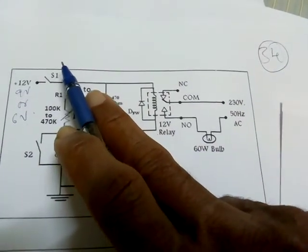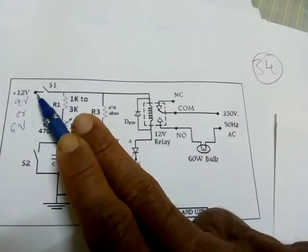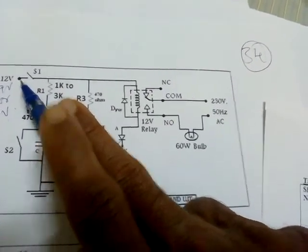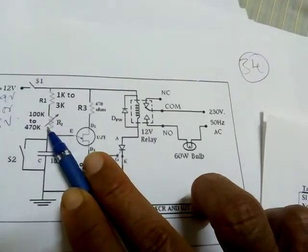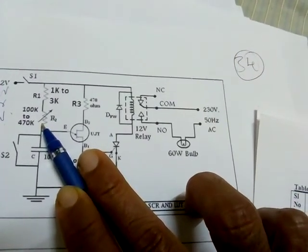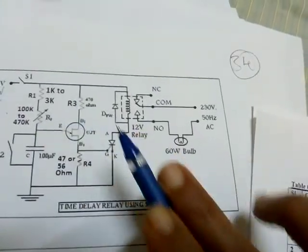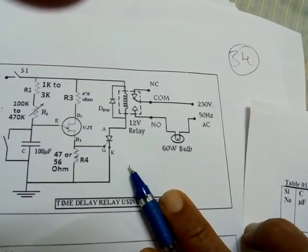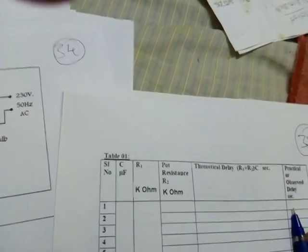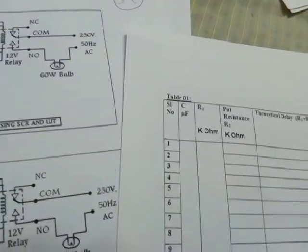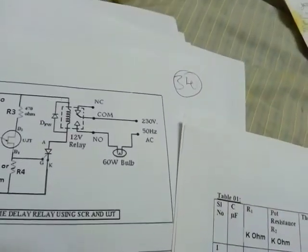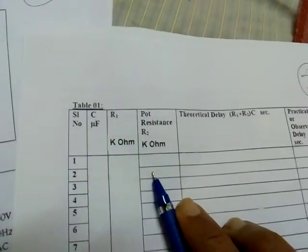Then, ready, 1, 2, 3. Close this and stopwatch starting simultaneously. After some time, it will take some time now, because you have increased the pot resistance. Now, when the bulb glows, switch off the stopwatch. Measure resistance, pot resistance after switching off and disconnecting the pot from the circuit. Also, note down the pot resistance here, time delay here.